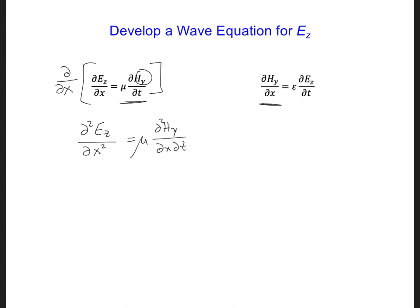Then we should take the partial time derivative of this left equation. And also, we should multiply times mu, since we have that in the other equation. And then here, we get a time and spatial derivative on Hy and mu epsilon times 2 partial time derivatives on Ez.